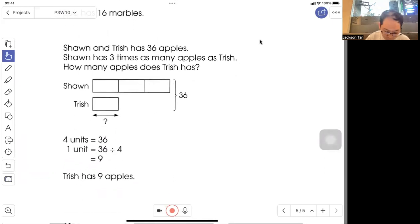Another example. Shawn and Trish has thirty-six apples. Shawn has three times as many apples as Trish. How many apples does Trish have? So three times, so one, two, three, three boxes. And Trish will be one box. So one box equal to one unit, total thirty-six. Then they ask how many apples does Trish have, so you put the question mark.